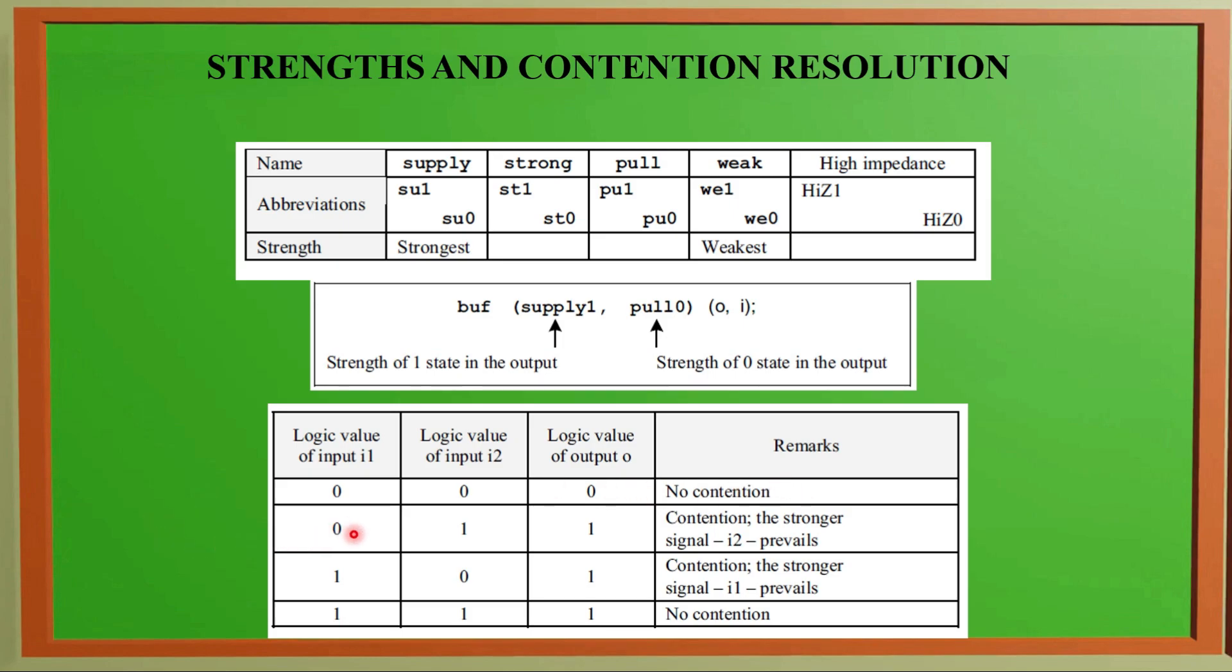If input 1 is 0 and input 2 is 1, and the logic output is 1, then there is contention with stronger signal prevailing. The prevailing is the second input because it is giving 1 in this case. When input 1 is 1, I1 will prevail. With 11 we get 1, but there is no contention.